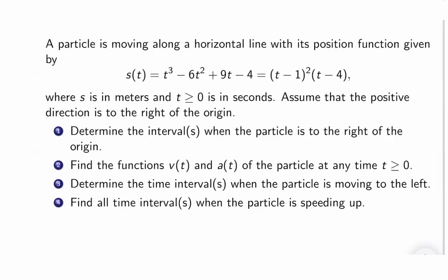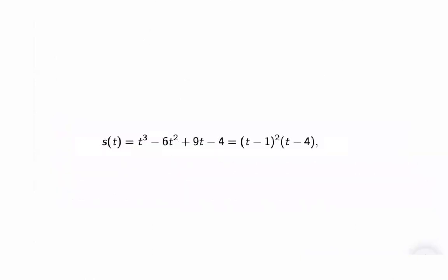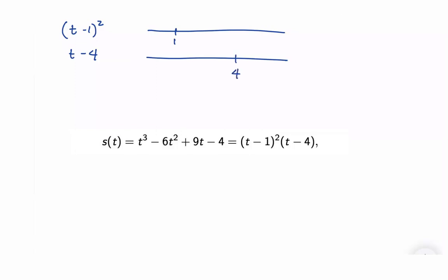What does it mean? It means that S of T is greater than 0. We already have our factorization of S of T. We make a table of values. T minus 1 squared will always be positive. This will be 0 when T equals 1, and T minus 4 will be 0 when T equals 4. So these are our critical numbers.